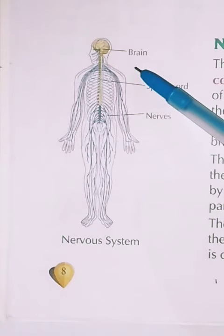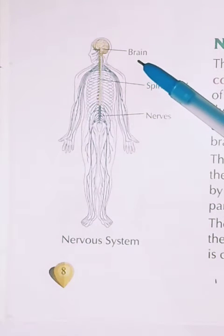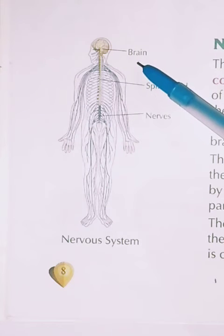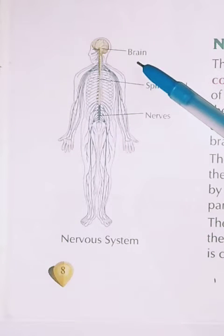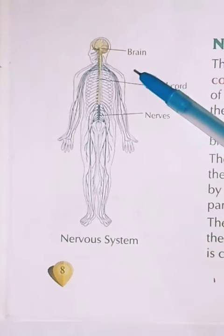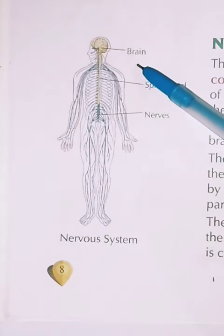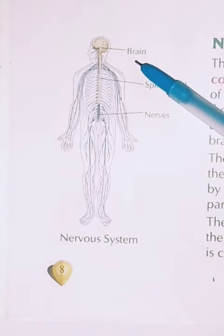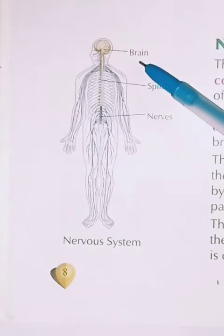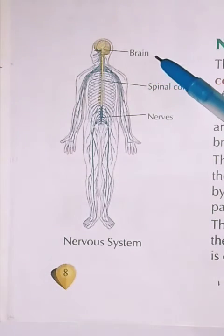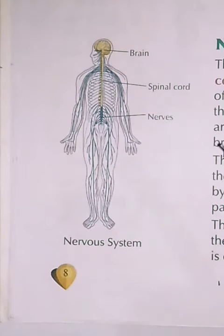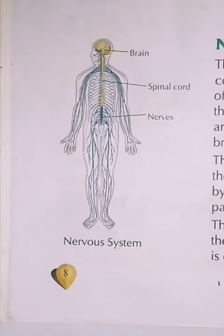The skull protects our brain because the brain is a very sensitive organ of our body. If you have any injuries, the skull protects the brain. The brain controls all the activities and also controls all the organs of our body.